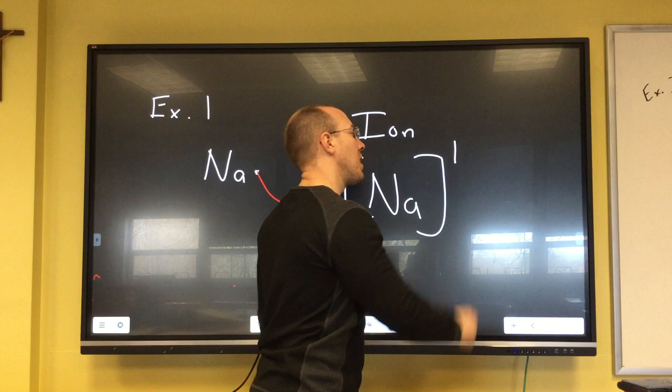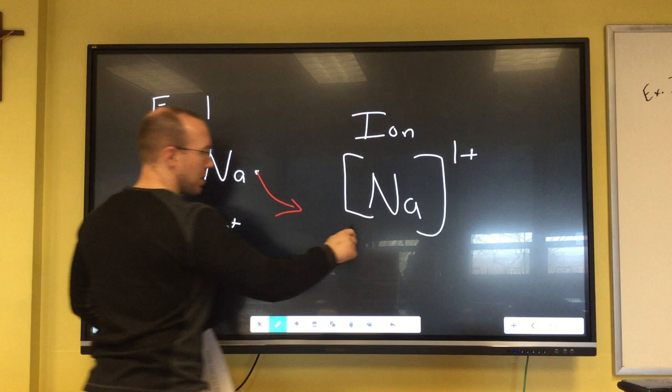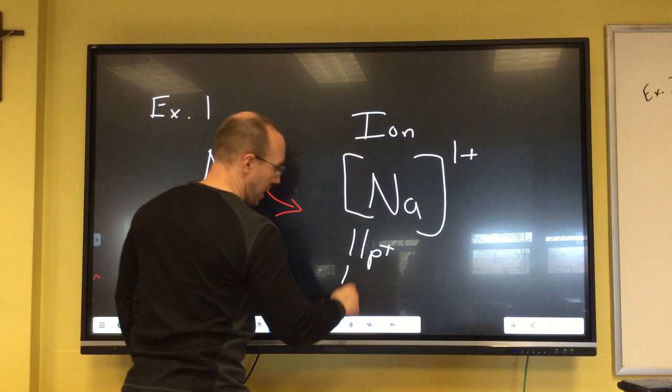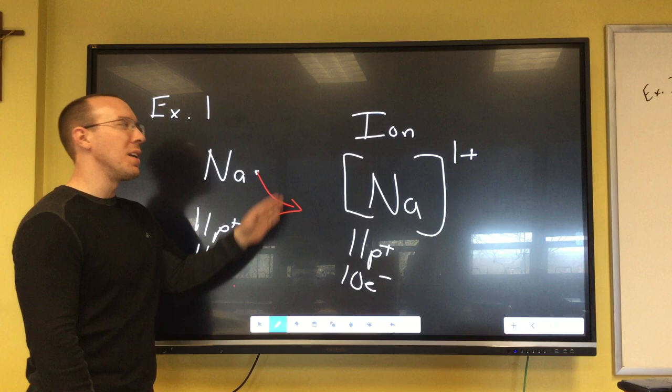If it loses a negative charge, it's going to be left positive. So when we look at sodium, it normally starts out with 11 protons and 11 electrons. Over here it's going to have 11 protons, but it loses this one electron so it only has 10 electrons. We have one more positive charge, which is why we put the one plus up there. A lot of students will want to put a plus one, but in chemistry we write it as one plus, like one extra positive charge.